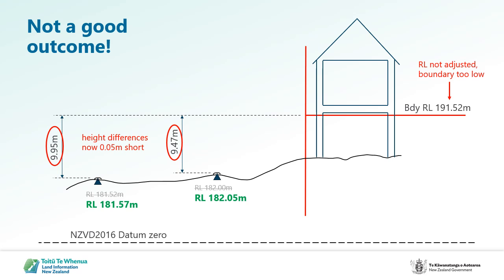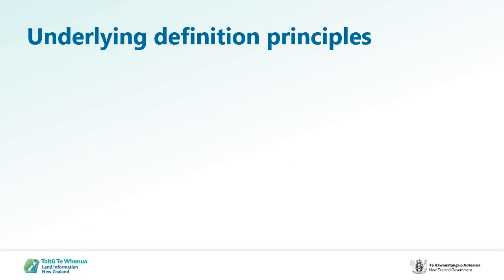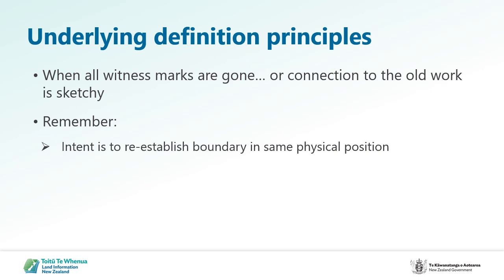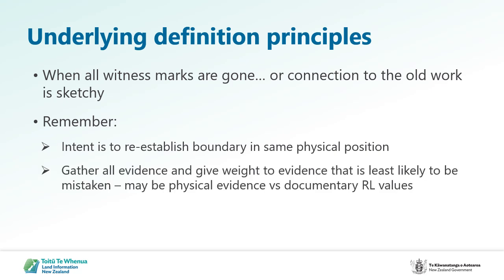This leads on to definition principles and weighting of evidence for re-establishing existing height limited boundaries. When all witness marks are gone, all connection to the old work is distant or a bit sketchy — for example, where the datum origin was a manhole lid or invert level — just remember: the ultimate intent is to re-establish the boundary in the same physical position it was originally defined. Gather all evidence and give weight to the evidence least likely to be mistaken. In a case where a documentary RL can only be reinstated in a tenuous manner and is in conflict with the structure, consideration needs to be given to which evidence carries more weight. Ensure the definition decisions you make are fully reported.